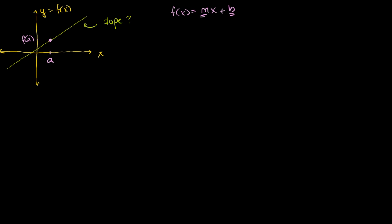And then we could take another point on this line. Let's say we take the point b right there. Then this coordinate up here is going to be the point (b, f(b)), because this is just the point when you evaluate the function at b — you put b in and you get that point right there. So that is f(b) right there. And this coordinate right here is the point (a, f(a)).